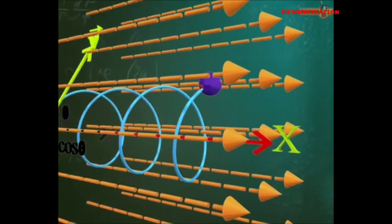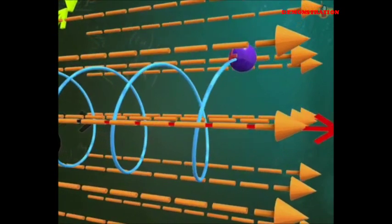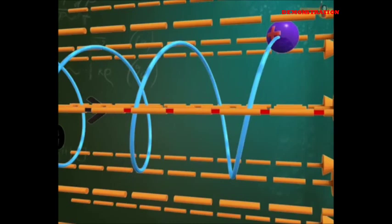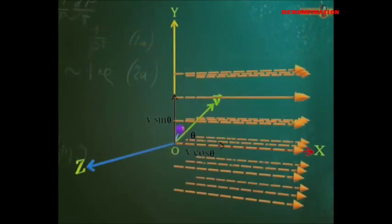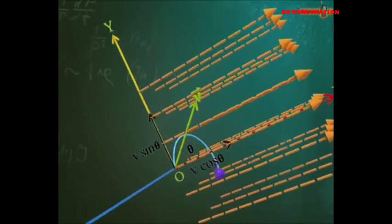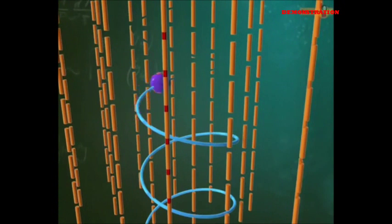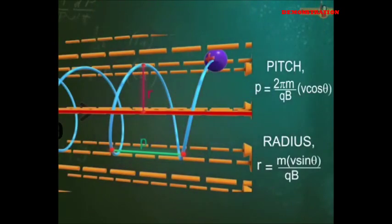Due to the parallel component of the velocity, no force acts on the particle and it continues to move parallel to the magnetic field along a straight line with velocity V cos theta. The combined effect of linear motion along the field and circular motion in a plane perpendicular to the field is helical motion, with the axis of the helix along the magnetic field. A helix is characterized by its pitch and radius, which is the linear distance covered by the particle along the magnetic field in one complete cycle.